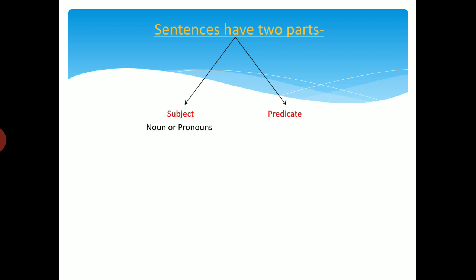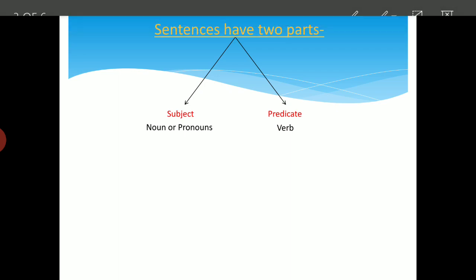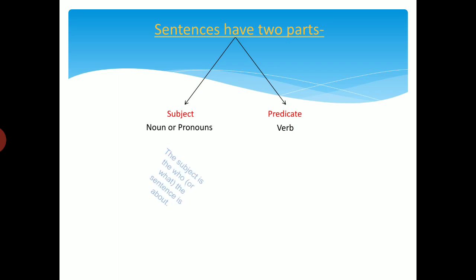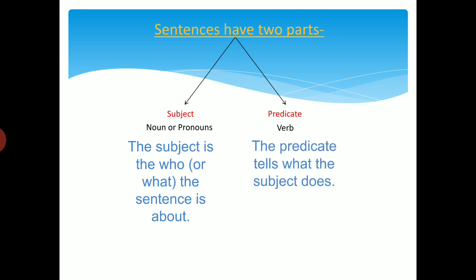Now, predicate. Predicate always has verb in it. It is compulsory to have verb in a predicate. We can say, the subject is the who or what the sentence is about. The subject tells who is the doer of the action. And predicate tells what action had been done by the subject that is told in the predicate part.